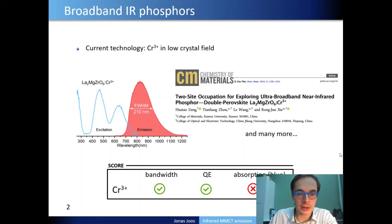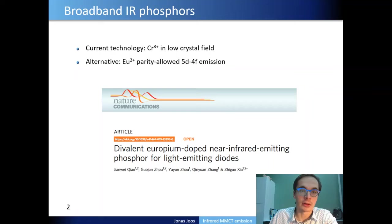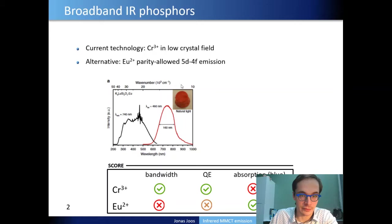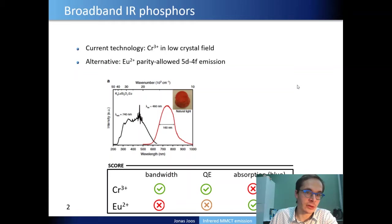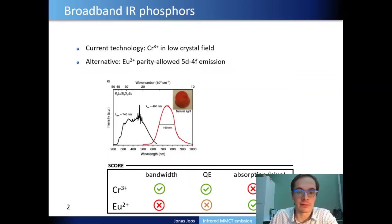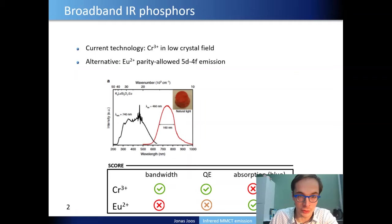To overcome this difficulty, people have proposed using different dopants like Europium 2+ where you have parity allowed transitions, giving higher absorption strength. This is shown by work from Chia where a very nice deep red body color indicates higher absorption strength. The downside of these Europium 2+ based materials is that their full width at half maximum is smaller than in the case of chromium based materials. So it would be very nice to combine the broad bandwidth of chromium based material with the high absorption strength of Europium 2+.